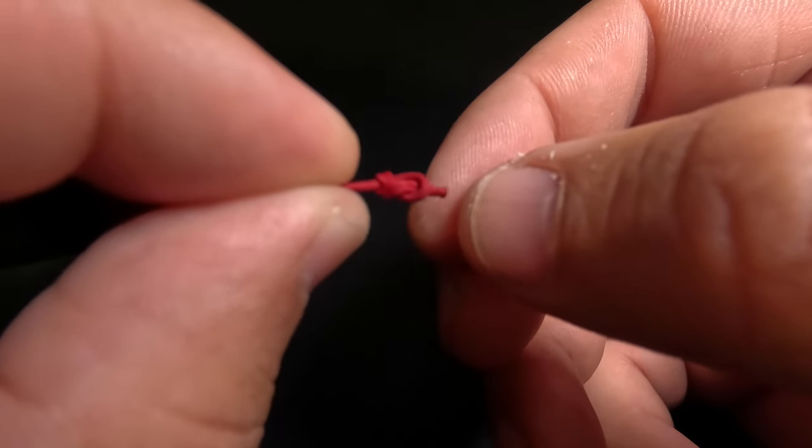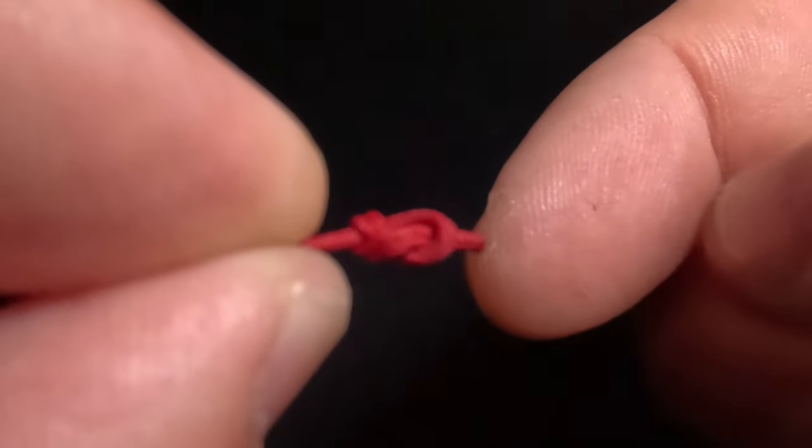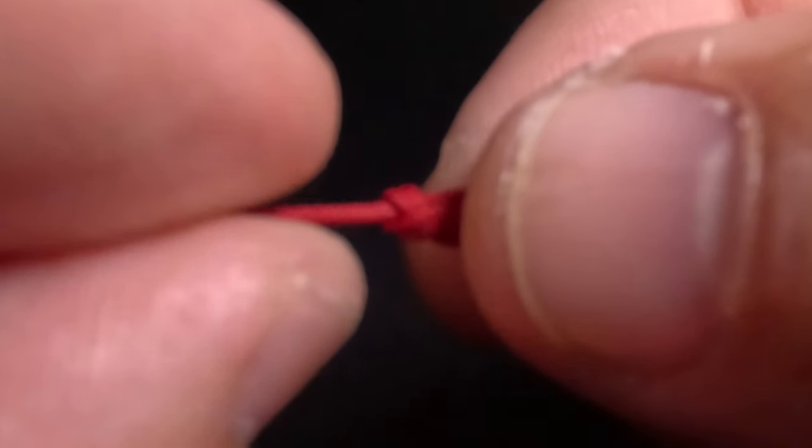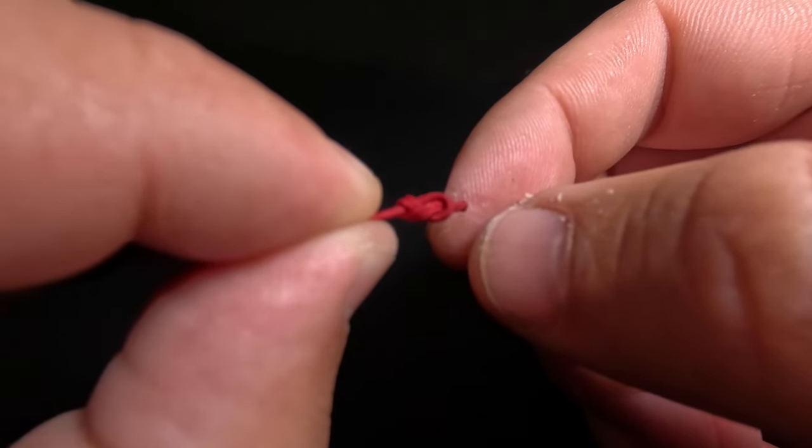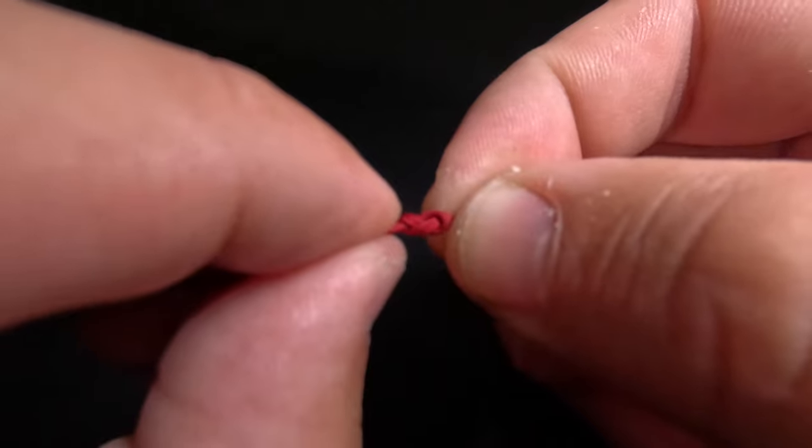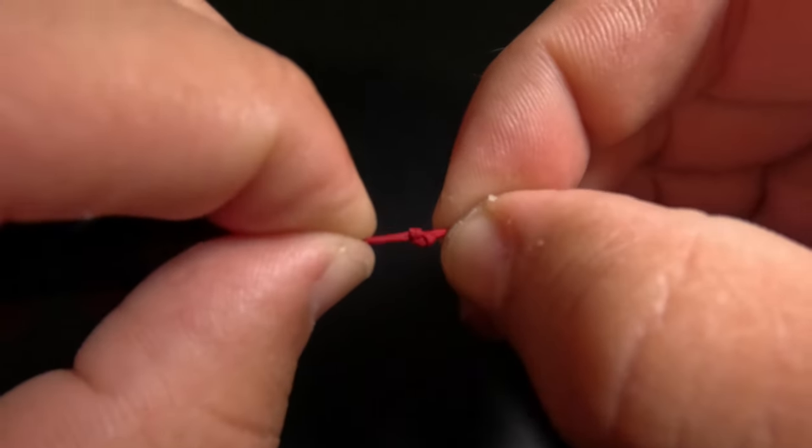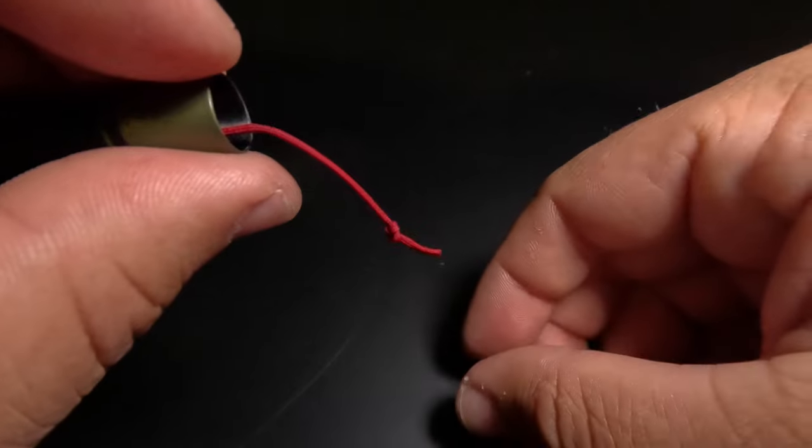Once we've taken the tip of that Lillian through the back side of our twisted loop, we should have a small scale figure eight. If you see that small figure eight, that means you've done it correctly. At this point, we're just going to take the tip of our Lillian and pull to cinch that knot down. After cinching that down tightly, our stopper knot is now completed and our Lillian is prepared.